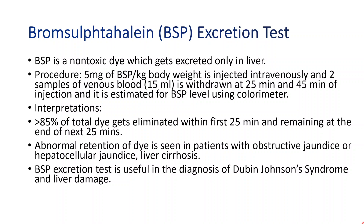During liver damage conditions like cirrhosis and obstructive jaundice, 40 to 50 percent of the dye will be retained in the 45-minute sample. This test is most useful for the diagnosis of liver damage without obstructive jaundice, chronic hepatitis, and it also helps to diagnose Dubin-Johnson syndrome. However, this test is of no value in the case of obstructive jaundice.